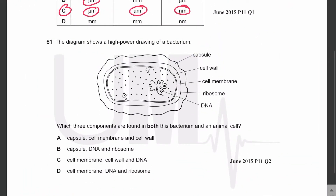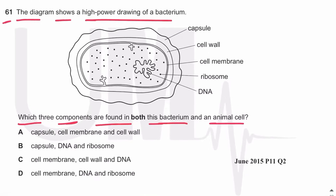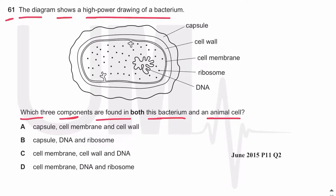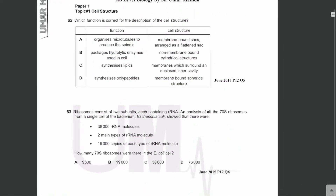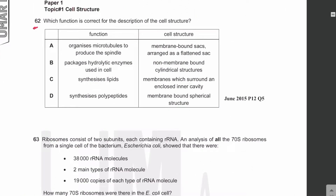MCQ 61: The diagram shows a high power drawing of a bacterium. Which three components are found in both this bacterium and an animal cell? Both the animal cell and the bacterium contain cell membrane, ribosome, and DNA. So the answer is D: cell membrane, DNA, and ribosome.